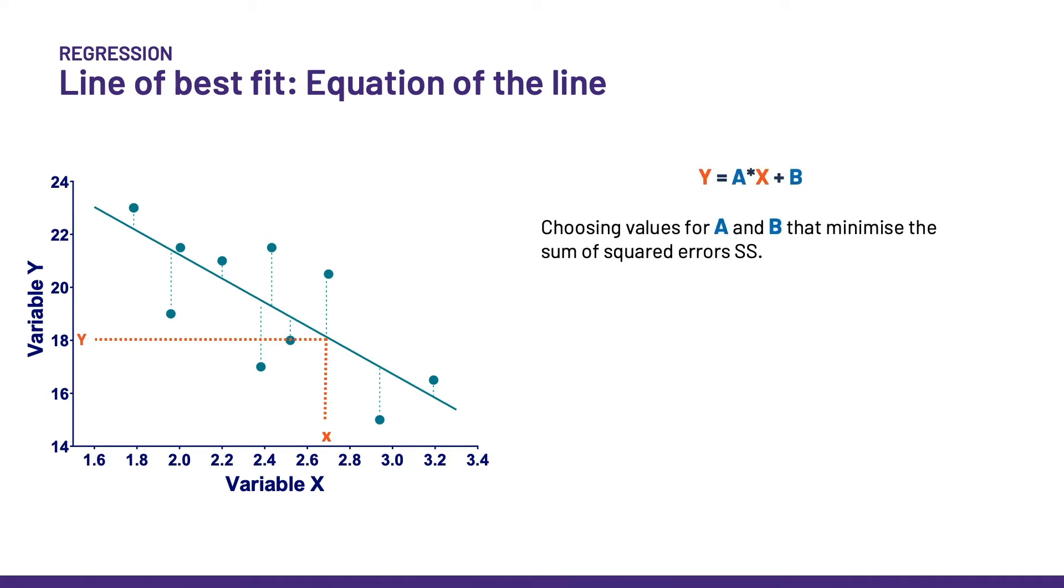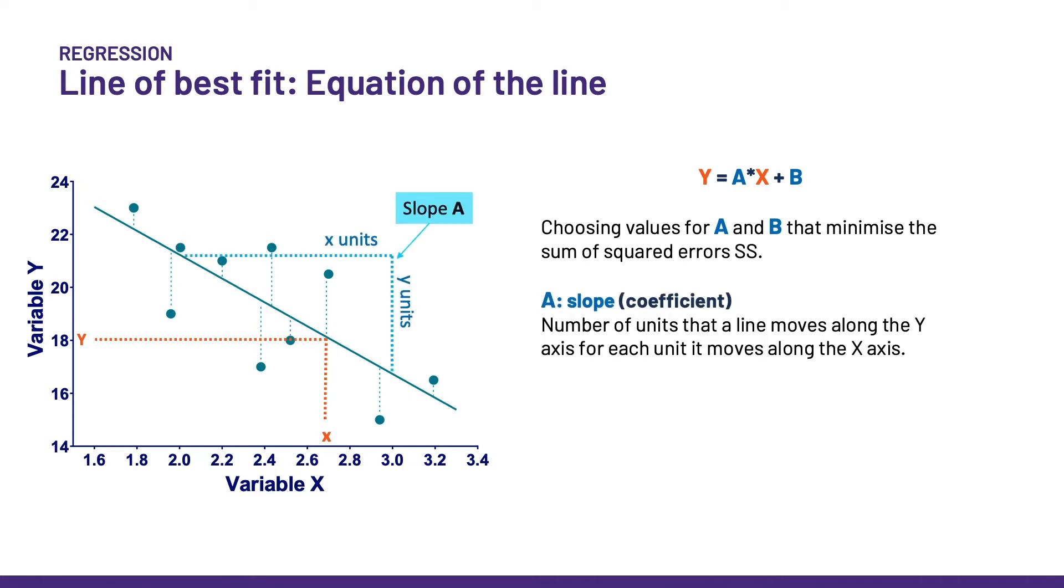So, time to talk about these parameters. A is the slope, often referred to as the coefficient. Basically, it is the number of units that the line moves along the y-axis for each unit it moves along the x-axis. As for b, it is the intercept or constant. It is the point at which the line cuts or intercepts the y-axis at x equals 0.